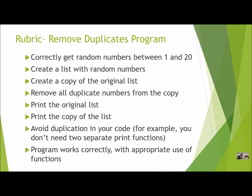Here's your rubric. This is an assessment grade worth up to 15 points. I'm going to be looking for: Did you get random numbers between 1 and 20, inclusive? Did you create a list with random numbers? Did you get a copy of the original list so you have two? Did you remove all duplicates from the copy, or just not include them to begin with? Did you print both the original and the copy? I would also like you to avoid duplication in your code — one of the main purposes of functions is that you can reuse code without writing a separate function for every little thing. And make sure your program works correctly, has no bugs, and makes appropriate use of functions.